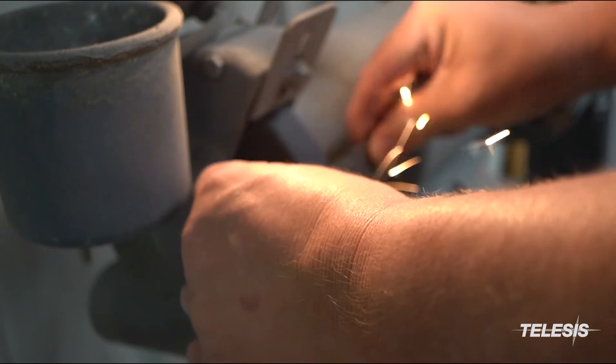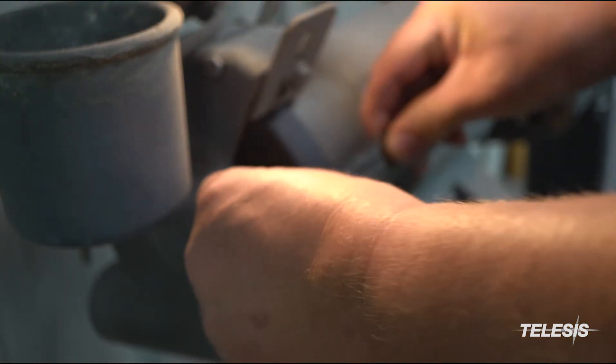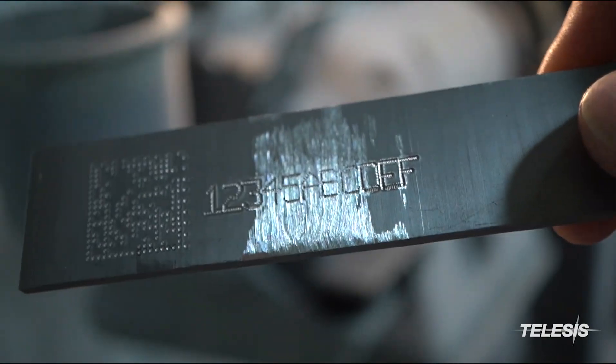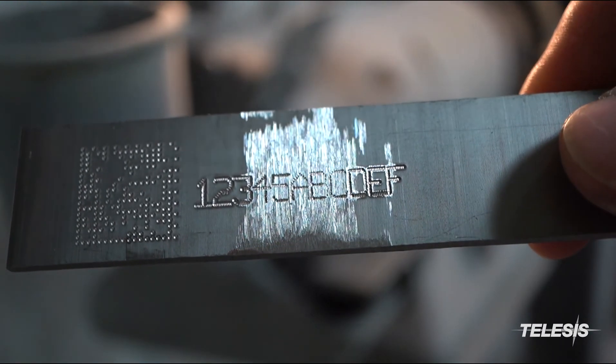Having a serial number is important for tracking, so permanent marking is critical. Deep marking can provide a mark that cannot be removed without extensive damage to the part.